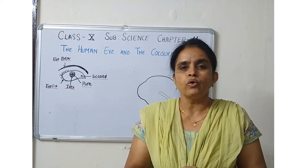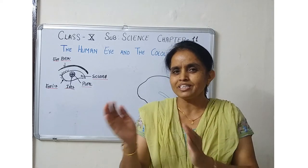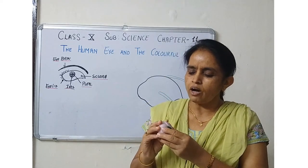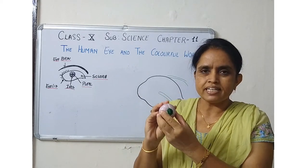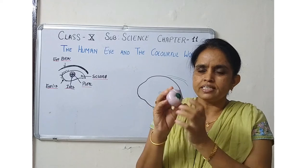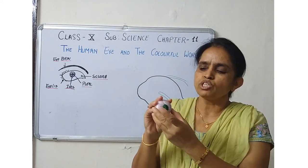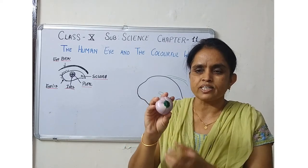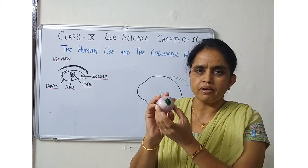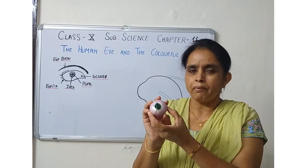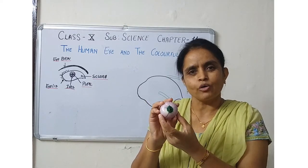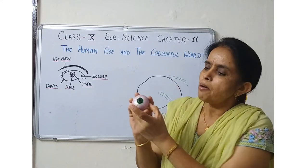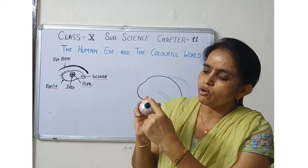Now if we look at the eyes from the outside, what do they look like? I will compare it a little with an onion. I have an onion in my hand — I have removed the outer coat, so it appears white. These fingers represent the extra-ocular muscles, which hold the eyeball and help it move left, right, up, and down.